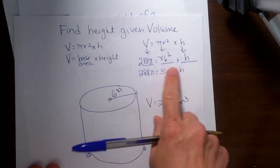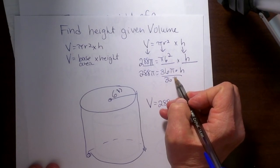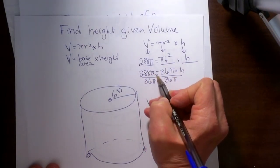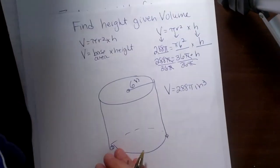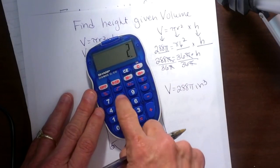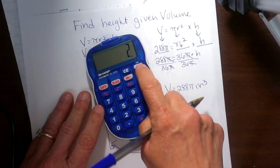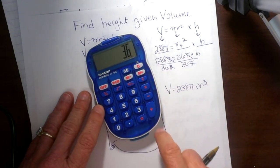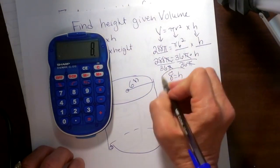From here I need to get the height by itself. I'm going to divide both sides by 36π. When I divide by π, the π's cancel out. Now I just need to take 288 and divide it by 36. 288 divided by 36 gives me 8, so the height is 8.